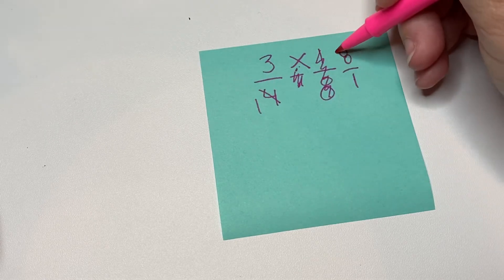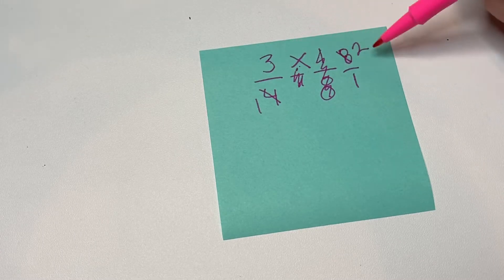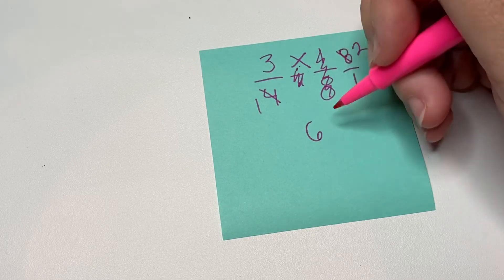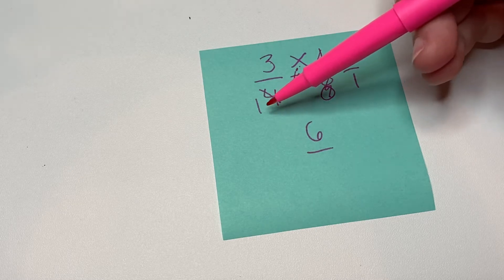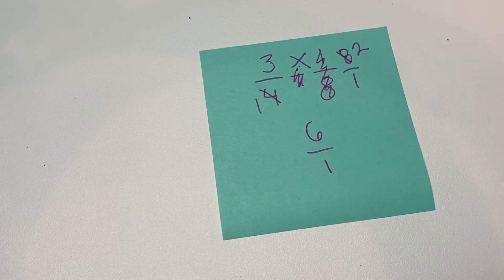So now we can do three times two, which is six, and on the bottom we have one times one, which is one. So we have six over one, and one can go into six six times.